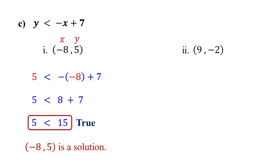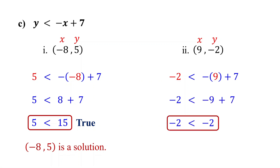For the ordered pair (9, −2), substitute 9 for x and negative 2 for y. Simplifying this, we find that negative 2 is less than negative 2, which is false. So the ordered pair (9, −2) is not a solution to the inequality.